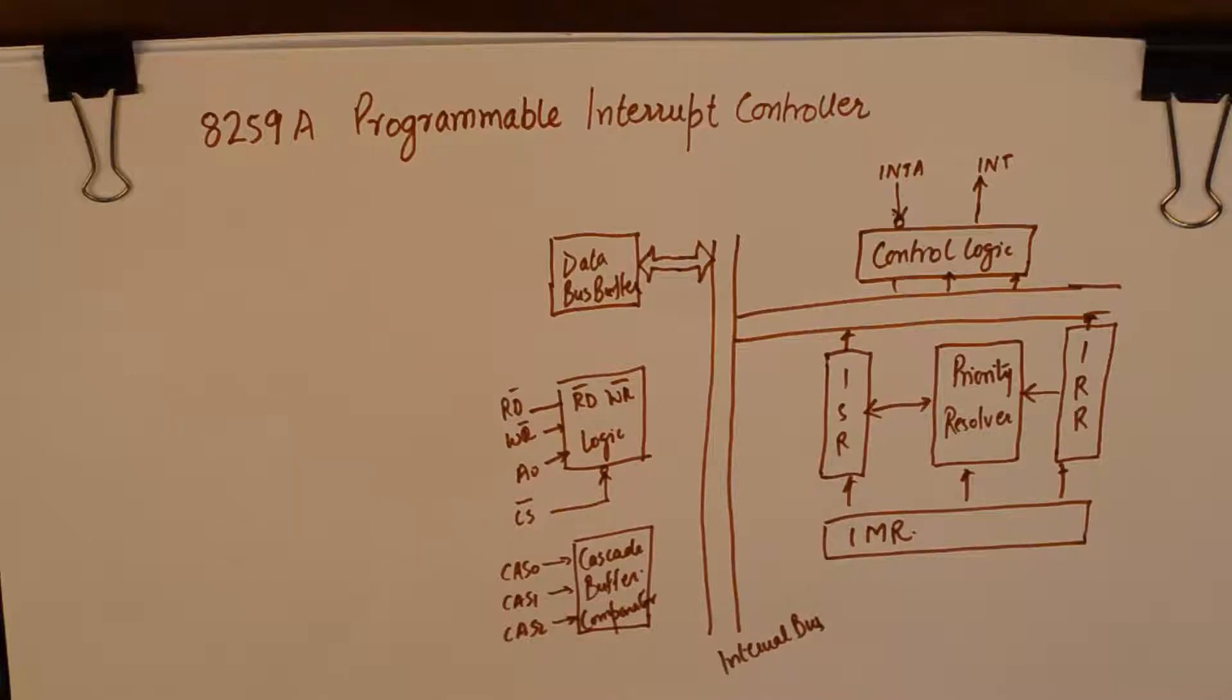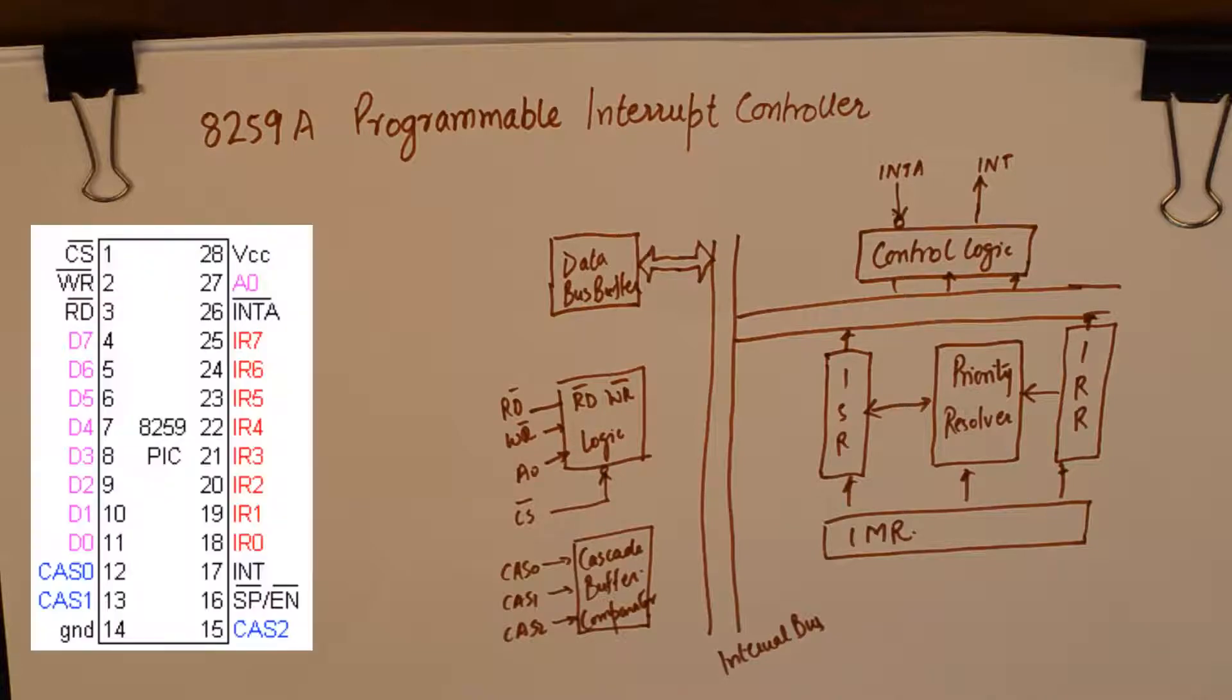The IC name for this IC is Programmable Interrupt Controller and it is designed to work with Intel microprocessor 8085, 8086 and 8088.